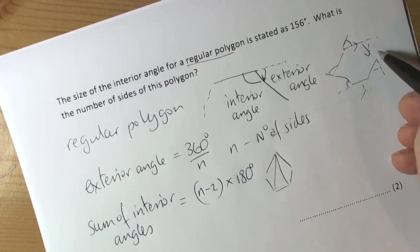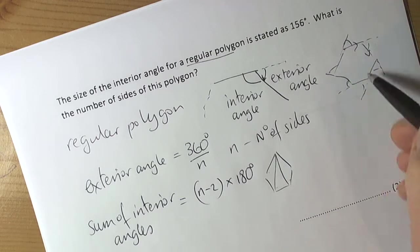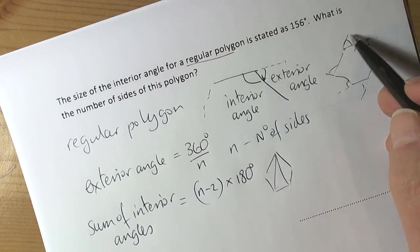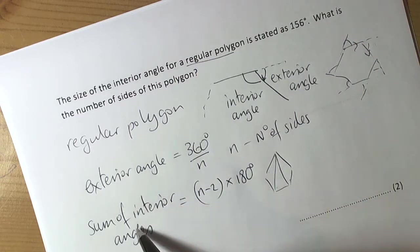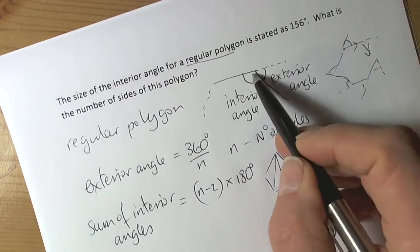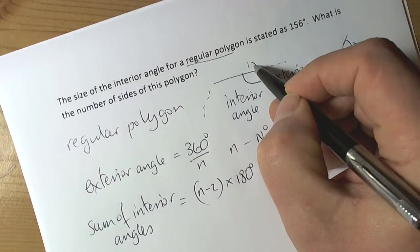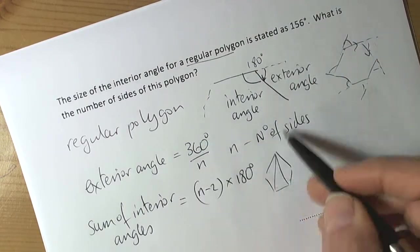Hence the reason it's 360 degrees divided by the number of sides for a regular polygon. Those two—interior and exterior—are on a straight line, so they add up to 180 degrees. We also have the 180-degree theory. So those are the three theories